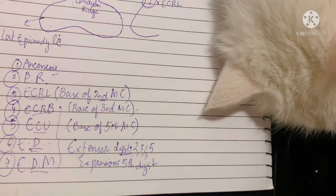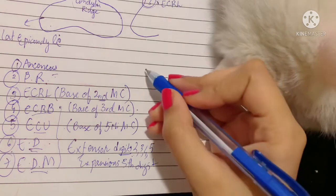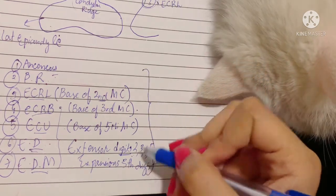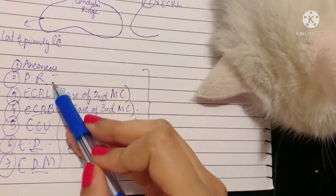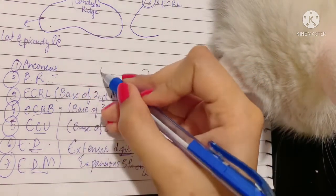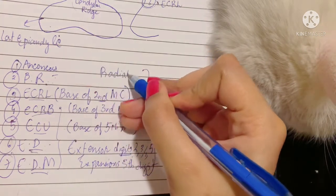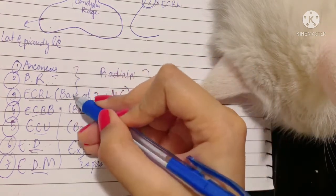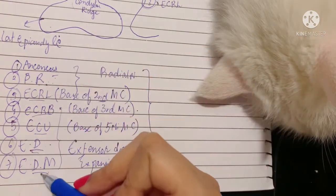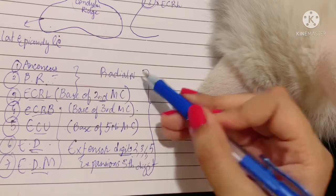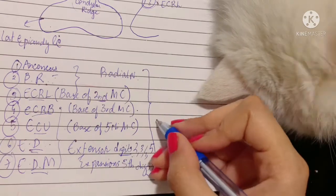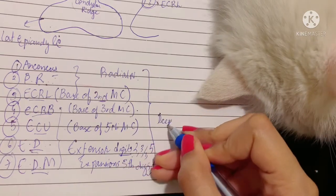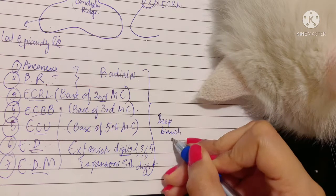Now, what about the nerve supply of these muscles? It's simple. The first three muscles — anconeus, brachioradialis, and extensor carpi radialis longus — are supplied by the radial nerve directly. The rest of the superficial muscles are also supplied by the radial nerve, but specifically its deep branch.